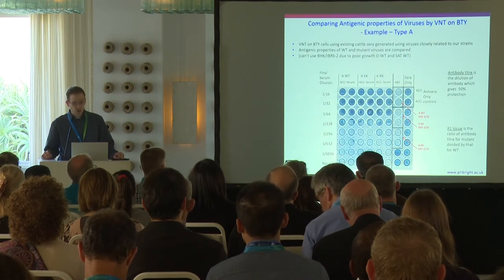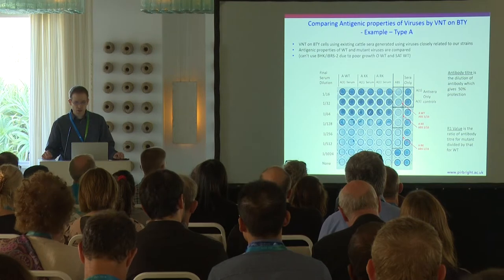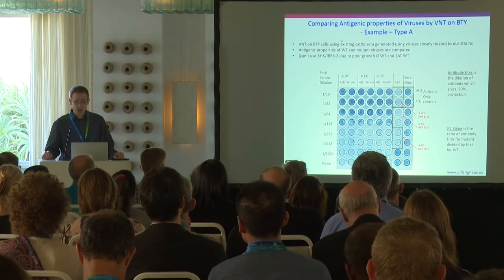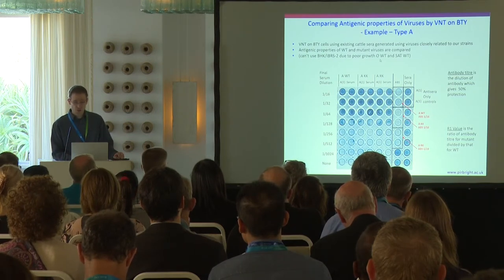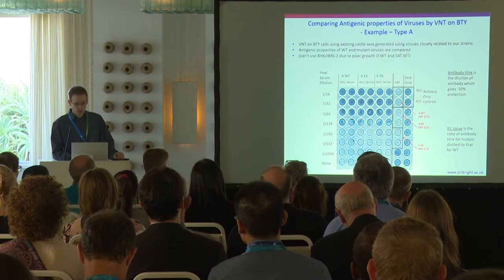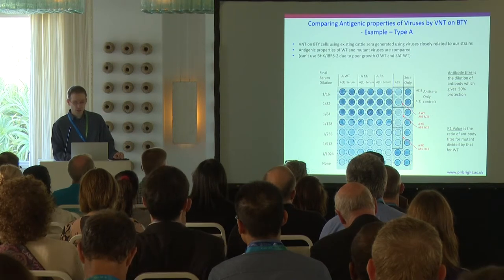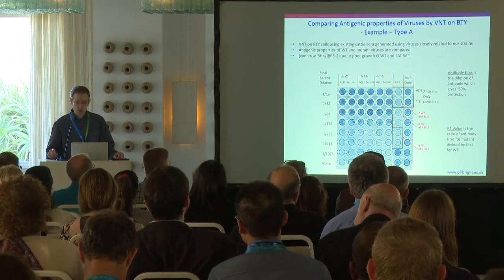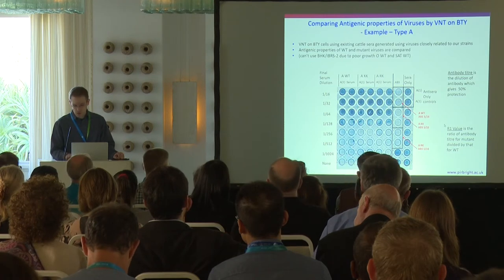When you're introducing these sorts of changes, one thing you need to look at is whether this causes any great antigenic changes to the virus. We did this by doing some VNTs on BTY cells using existing cattle sera generated using viruses closely related to our strains. We couldn't use BHK or IRIS2, since the O and the SAT wild-type really don't grow in these cells. The antibody titer here is the dilution of antibody which gives 50% protection, and the R1 value is the ratio of antibody titer for mutant divided by that for wild-type.